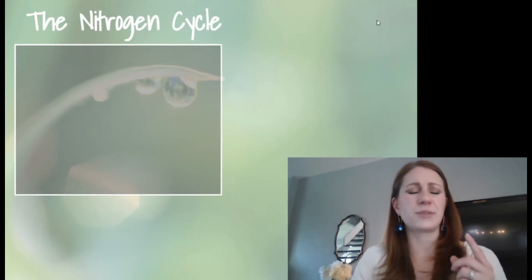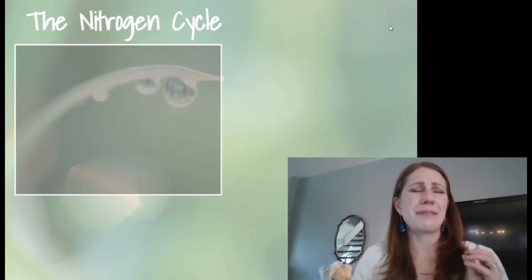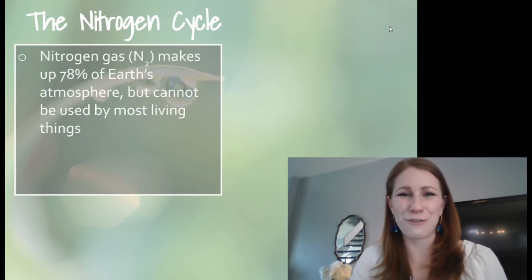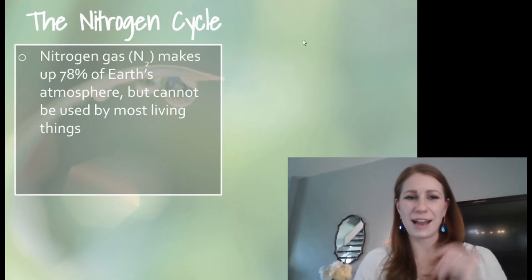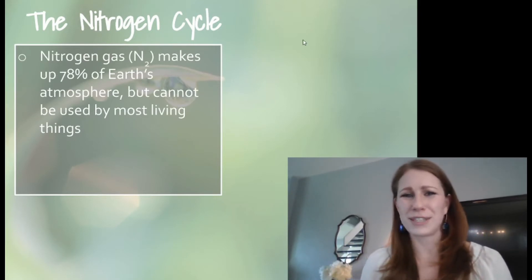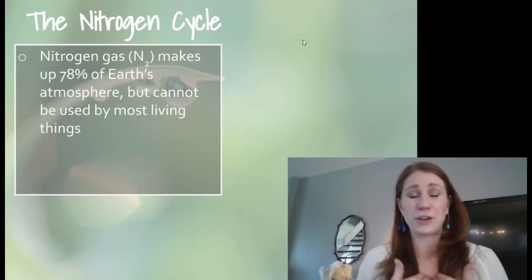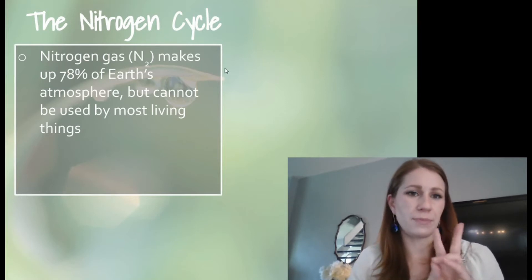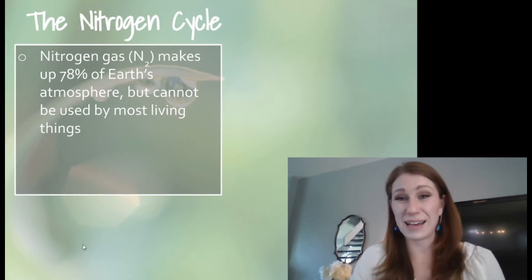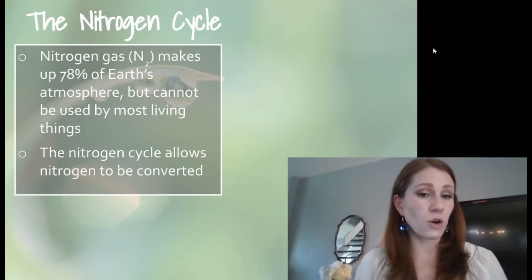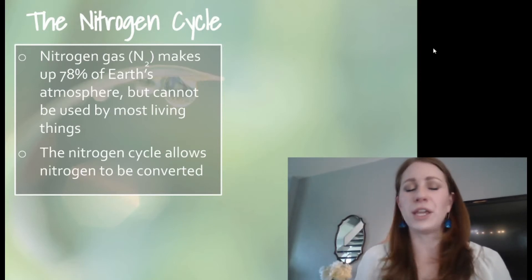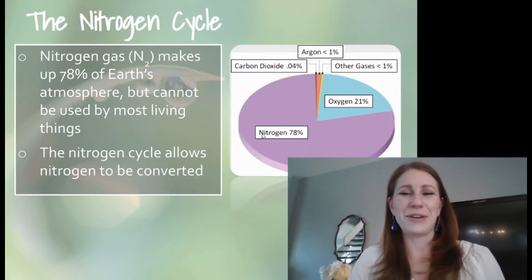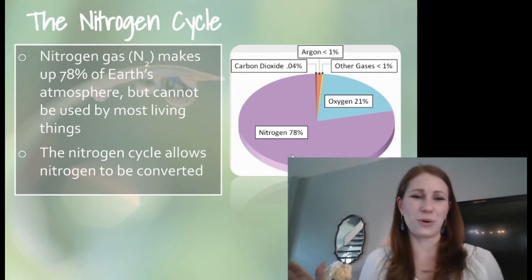When we talk about the nitrogen cycle, it's really important to note that nitrogen makes up the majority of our atmosphere, but we can't use it in that form. It's about 78% of our earth's atmosphere, but we cannot use it as it appears. N2 — that diatomic molecule of two nitrogens together — we cannot use that as it stands. If you look at this pie chart, you can see that nitrogen is the vast majority of what's in our atmosphere. We do have quite a bit of oxygen as well, plus carbon dioxide, other gases, and argon, but nitrogen is the biggest one.